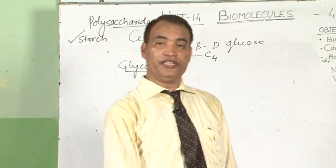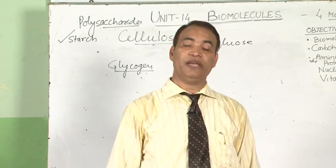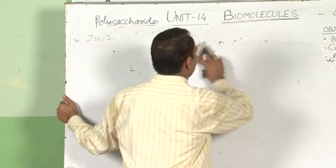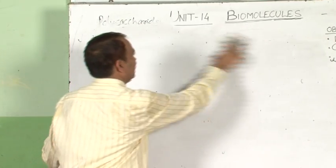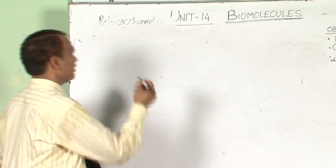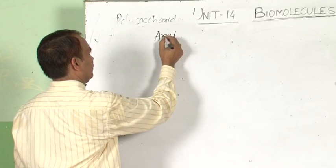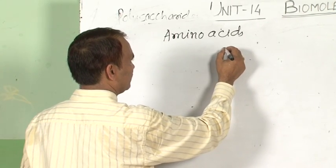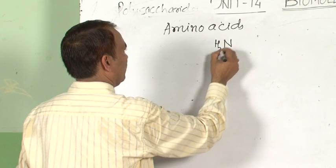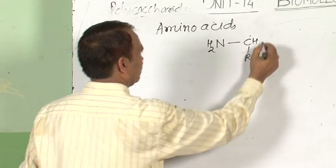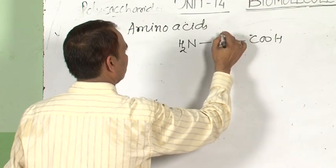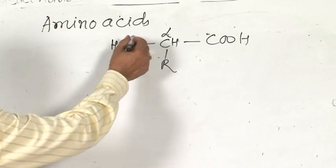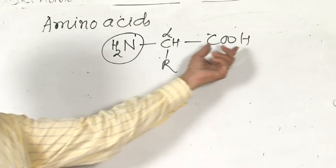Now we discuss proteins. Before that, we need to know about amino acids. An amino acid is a compound having both an amino group and a carboxylic group. The general structural formula represents alpha-amino acids, where the amino group is at the alpha position. Amino acids have two functional groups: the amino group and the carboxylic group.